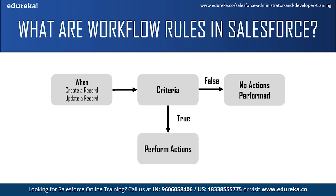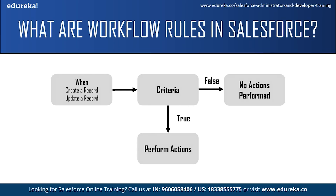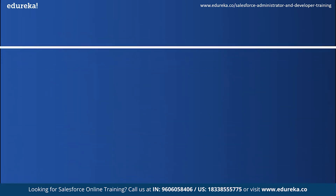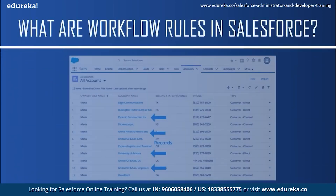Objects in Salesforce are like leads, accounts, opportunities, contacts, or any other custom object. Fields are basically the columns in the table that tell us what is stored in the records, and records are the rows or any entry in the table — the information of an individual.